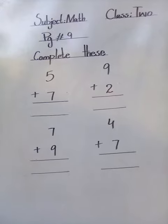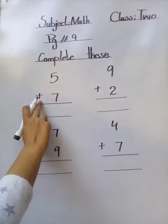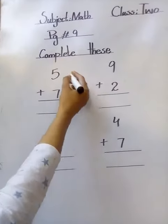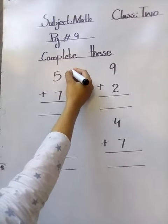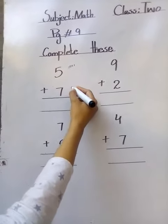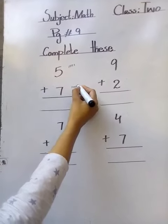This is five plus. We will add these numbers. This is five, we will draw here five lines: one, two, three, four, five. Here we will draw seven lines: one, two, three, four, five, six, seven.